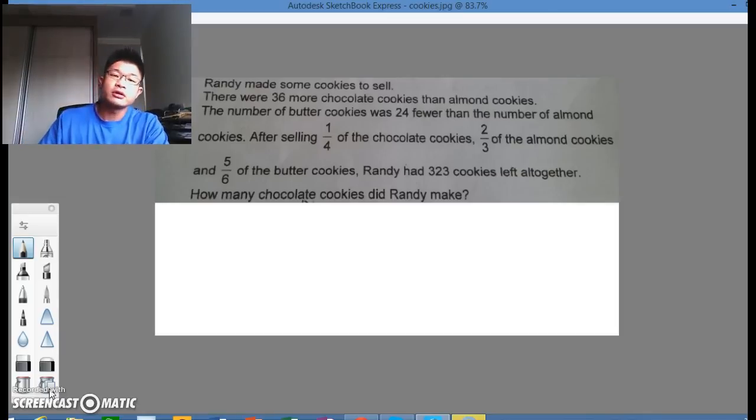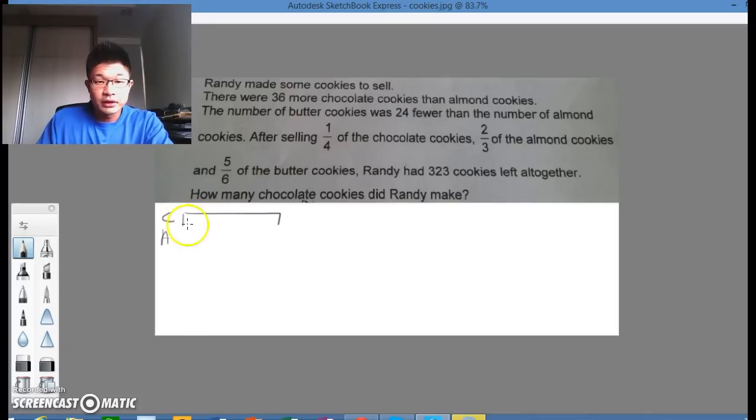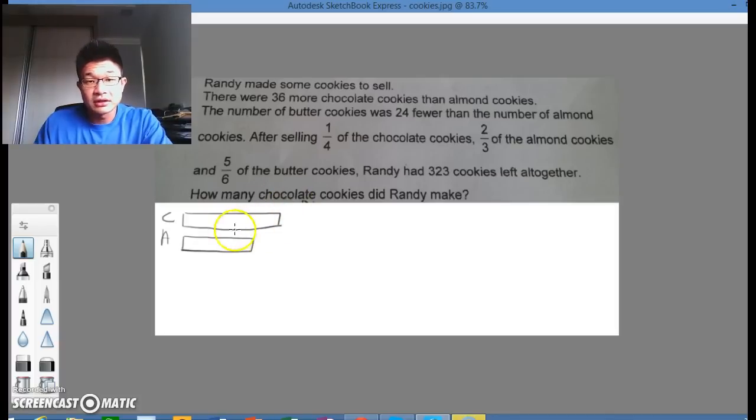Well, first of all, we're going to draw a comparison model between the chocolate and almonds. So attempt to write as neatly as possible. Chocolate and almonds. Chocolate we have a big one, compared with the almonds. The almonds have got 36 more chocolates. So here we go. We've got 36 here.